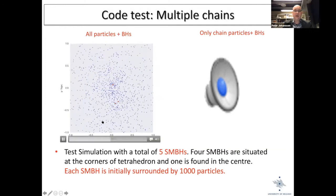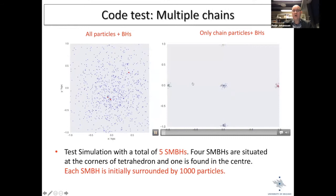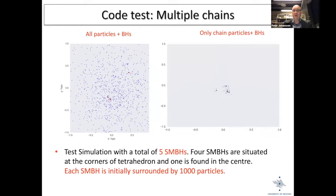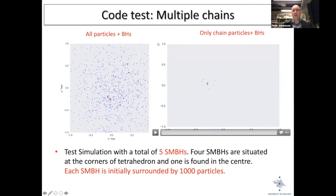In the animation, each black hole has its own chain region shown by color. When they join, they share the same chain. When a black hole is thrown out, it has its own chain region; when it returns, they interact in the same chain region. This merging of regions is done adaptively. This is just a low-resolution simulation illustrating the idea.